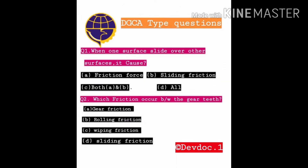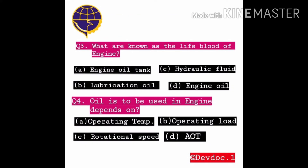Let's start the DDC type questions. First question: When one surface slides over another surface, it causes — Option A: Friction force, B: Sliding friction, C: Both A and B. Second question: Which friction occurs between the gear teeth? Option A: Gear friction, B: Rolling friction, C: Wiping friction, D: Sliding friction.